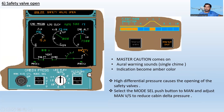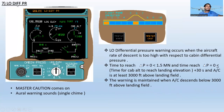Next is Safety Valve Not Open. The master caution comes on and the oral warning sounds as a single chime; indications become amber. Applicable flight phases are one, two, three, and six. High differential pressure causes the opening of the safety valve. If this occurs, select the mode selector push button to manual and adjust the manual vertical speed to reduce the cabin delta pressure.